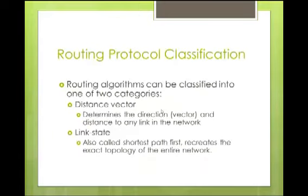Routing protocols are typically classified into two main categories: distance vector and link state. We will spend the next chapter talking about distance vector, and the chapter after that talking about link state. The distance vector determines the direction or vector and the distance to any link in the network, whereas link state, also called shortest path first, recreates an exact topology of the entire network.